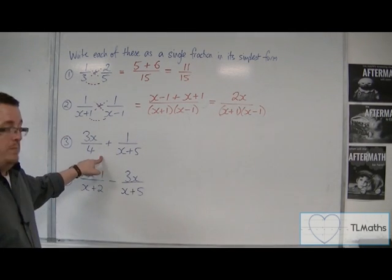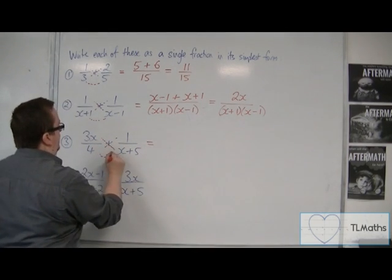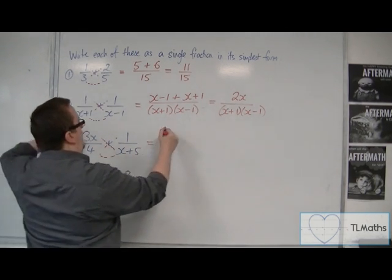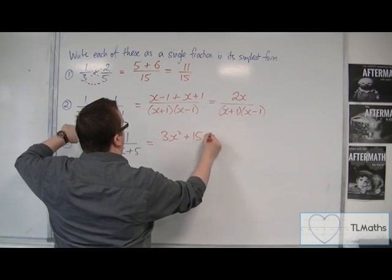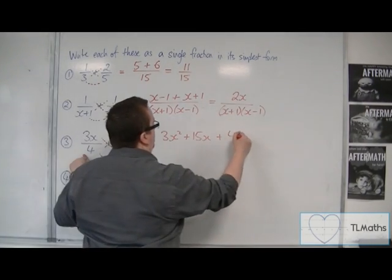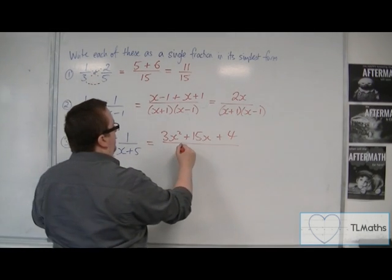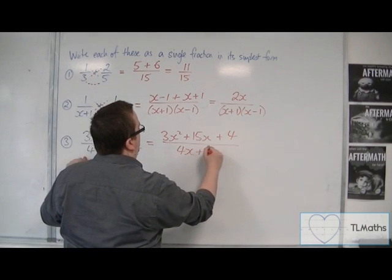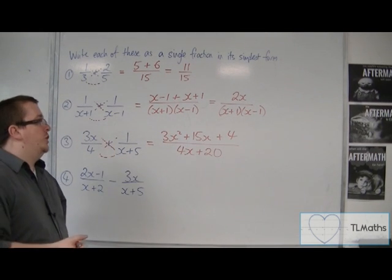Let's have a look at number 3. Same method. So we've got 3x times x plus 5. So 3x squared plus 15x plus 1 times 4 over 4 lots of x plus 5. So 4x plus 20. And that's as simplified as that fraction can go.